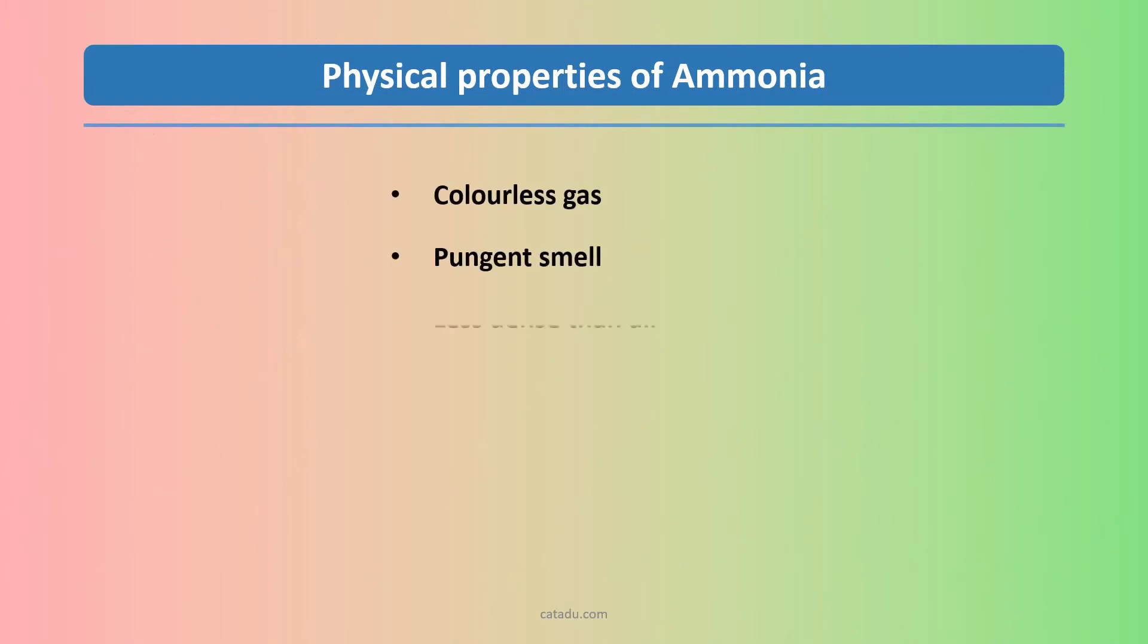Molecular mass of ammonia 17 is much smaller than the air. So, this is less dense than the air. Ammonia soluble in water will make ammonium hydroxide. And this alkali gas turns red litmus paper blue.